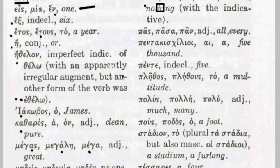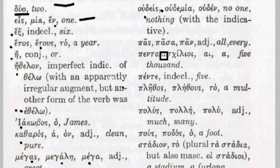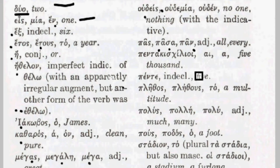We have the adjective pas, pasa, pan — masculine, feminine, and neuter. This is the word that means all or every. When used in the singular sense it's typically going to mean every — as in 'every man should do a good job' — whereas when used in the plural it will typically have the word all, as in 'all people should salute the flag.'